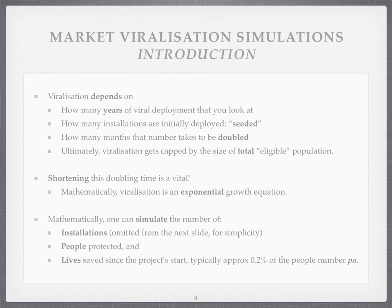The market viralisation that could happen with a simple solar pasteuriser — which is installed easily and doesn't need any cost or money to keep it running — depends on lots of issues: how long you look at the difference between starting the project and saying how many people have I potentially saved; how many installations you put in; and how many months it takes for that number to double. Viralisation would get capped if you actually reached the total number of eligible people whose lives you might want to save. That's very optimistic, of course, but it's always worth putting it in. Shortening the doubling time is vital, as the spreadsheet coming up will show, because mathematically viralisation is an exponential growth equation.